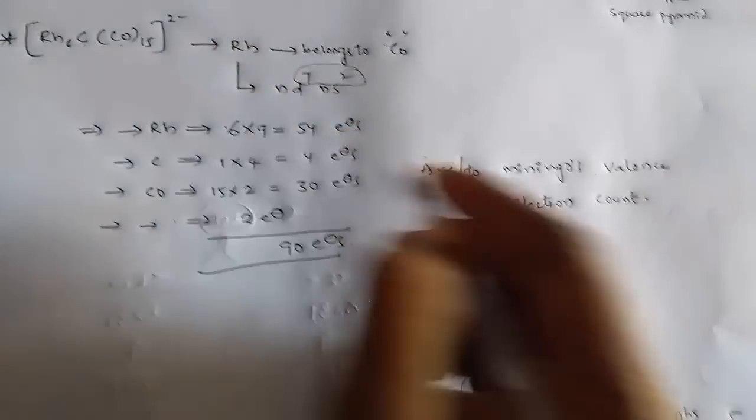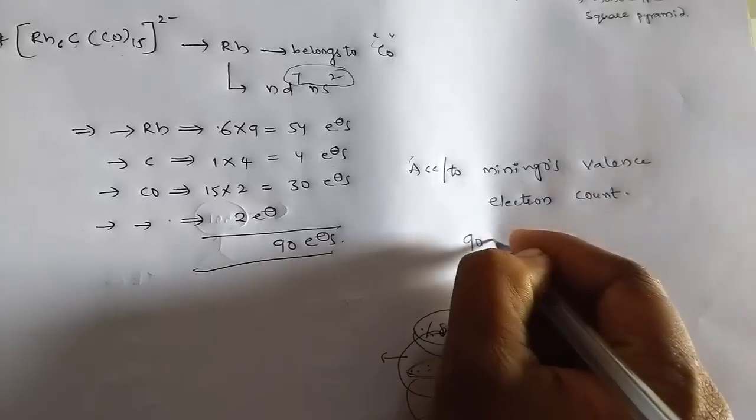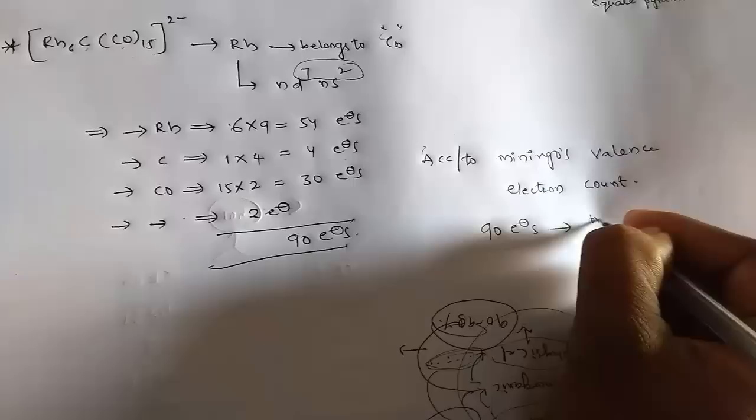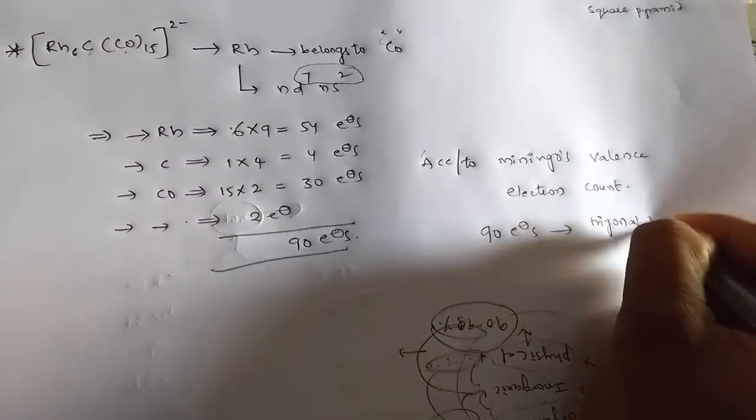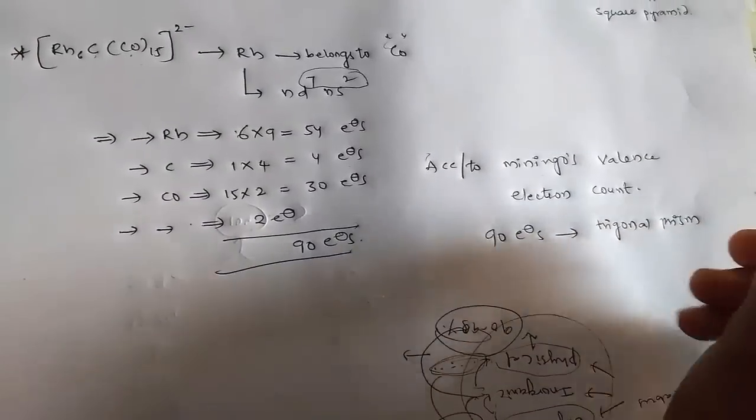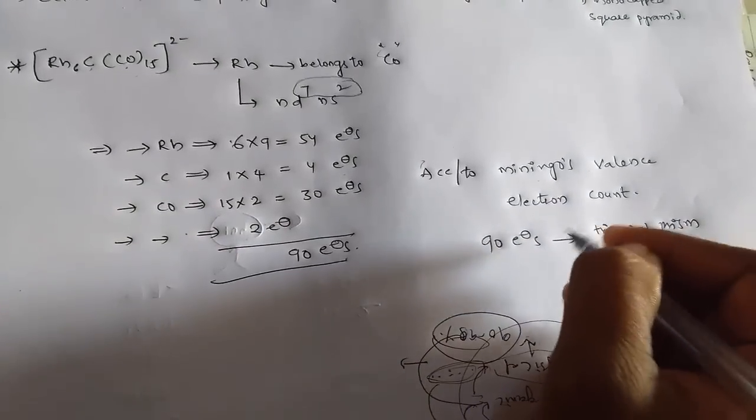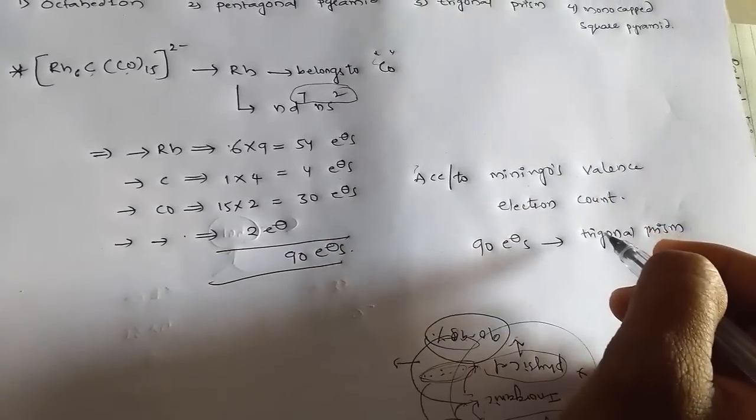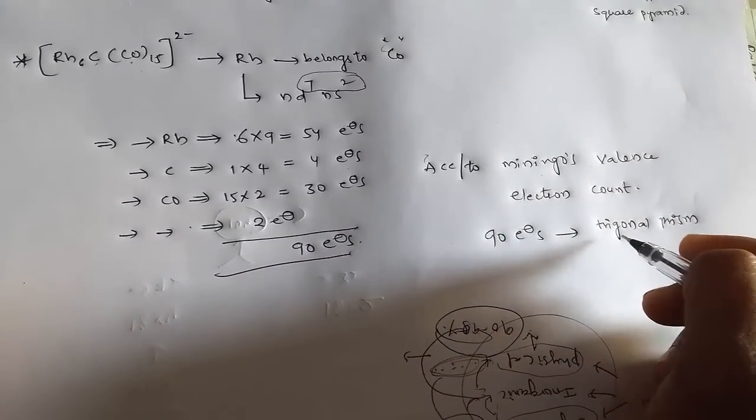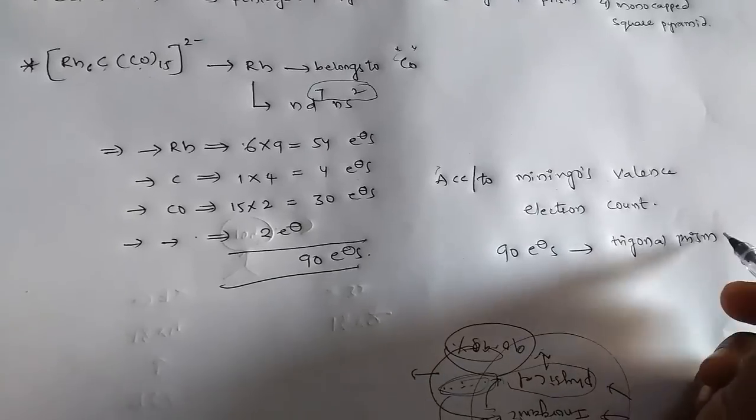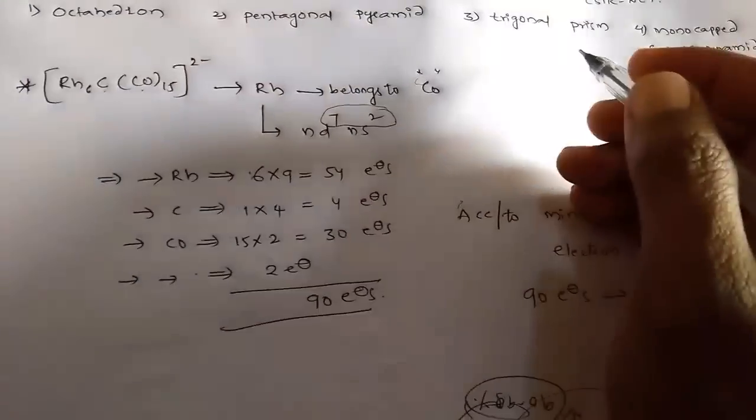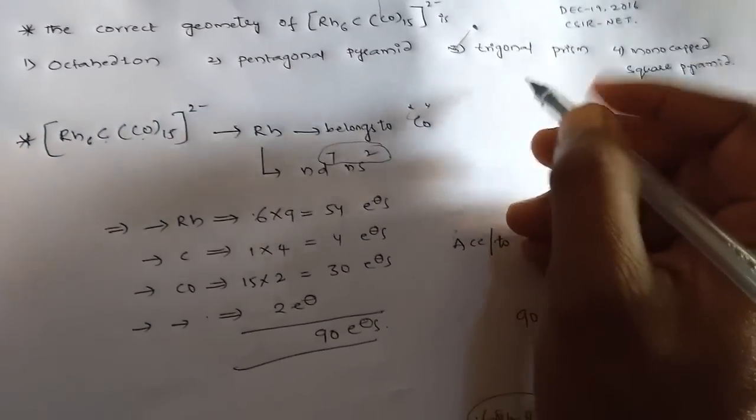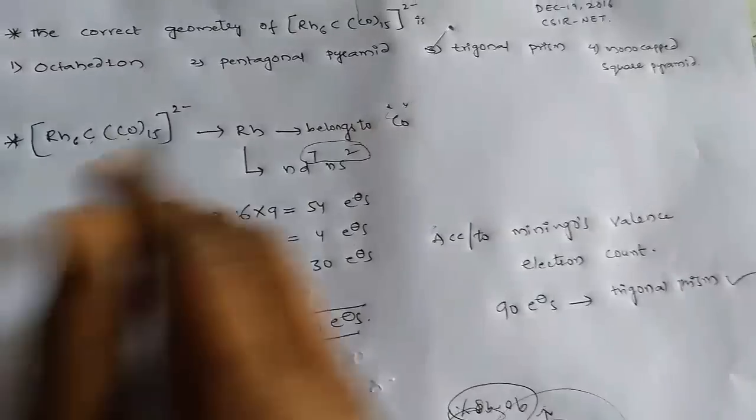If a complex has 90 valence electrons, then that is simply trigonal prismatic structure. That means if the complex contains 90 valence electrons, according to Mingos valence electron count, that structure is simply called trigonal prismatic geometry. Hence from the given options, the third option trigonal prism, so this complex has trigonal prism geometry.